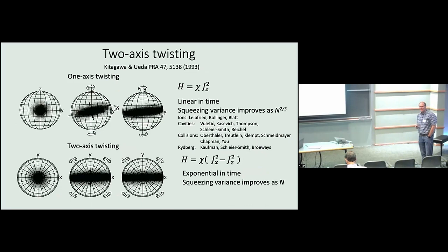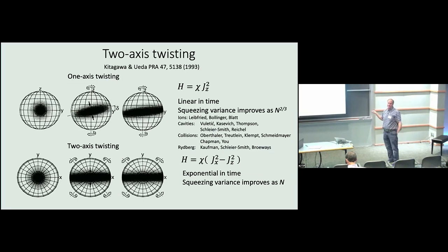In the few minutes I have left, I'll talk about two-axis twisting. Thirty years ago, Kitagawa and Ueda proposed that you could do very interesting things with a one-axis twisting Hamiltonian, and lots of groups have done beautiful work on this. They also proposed in the same paper a two-axis twisting Hamiltonian that creates squeezing exponentially in time and allows you to go closer to the Heisenberg limit. To the best of our knowledge, this hasn't been done experimentally — if it has, please tell us.